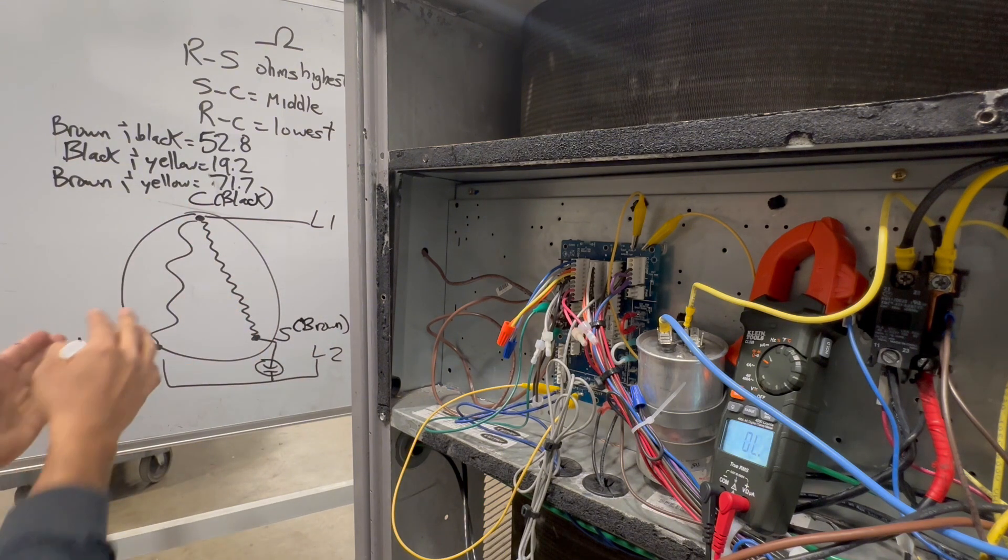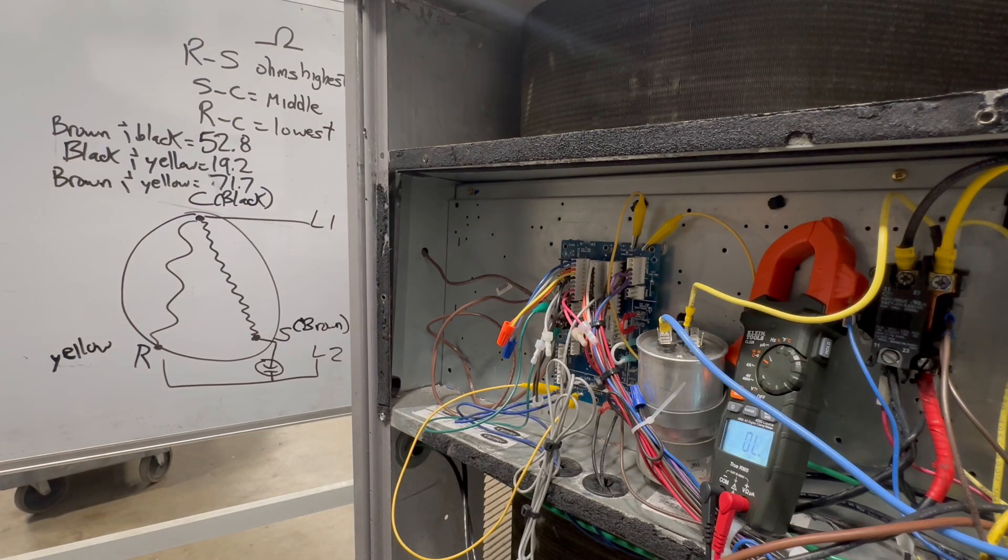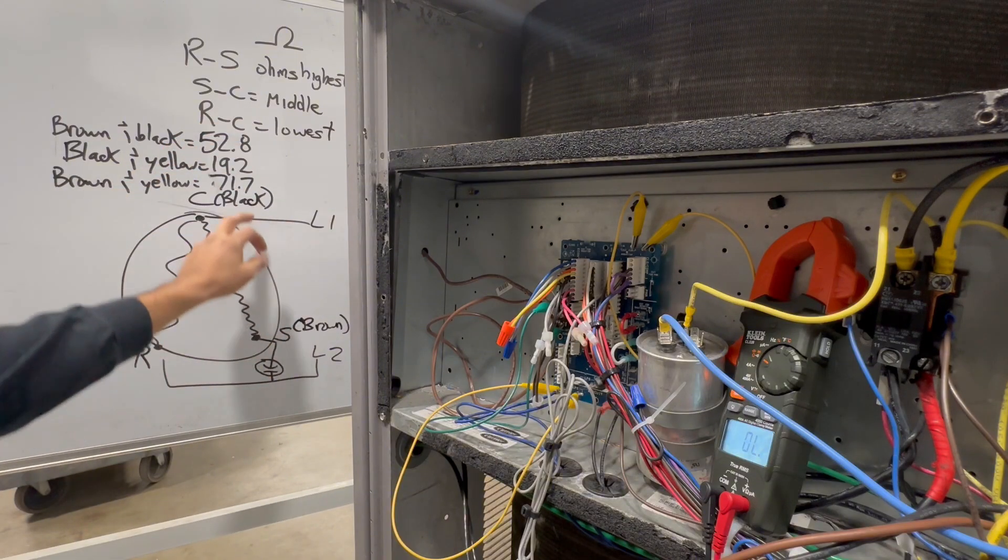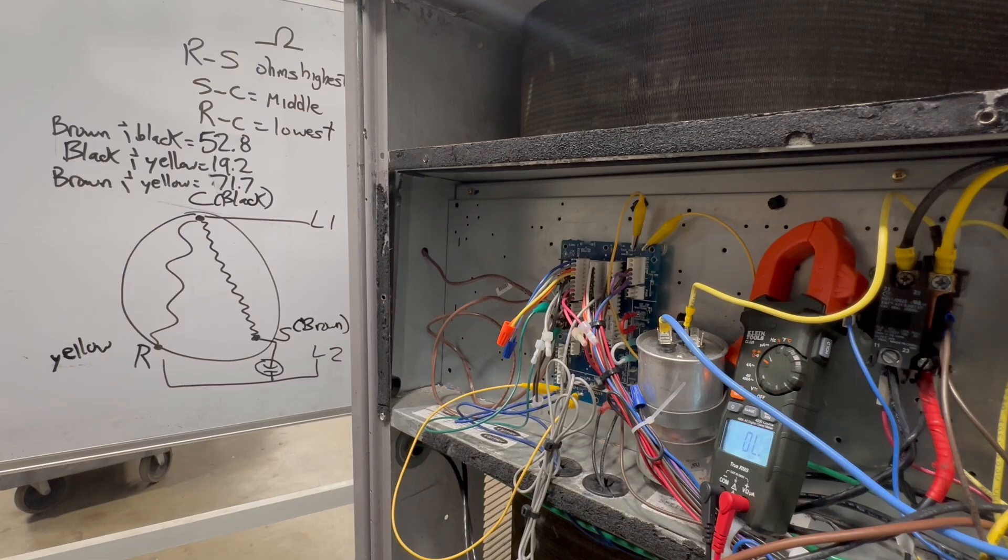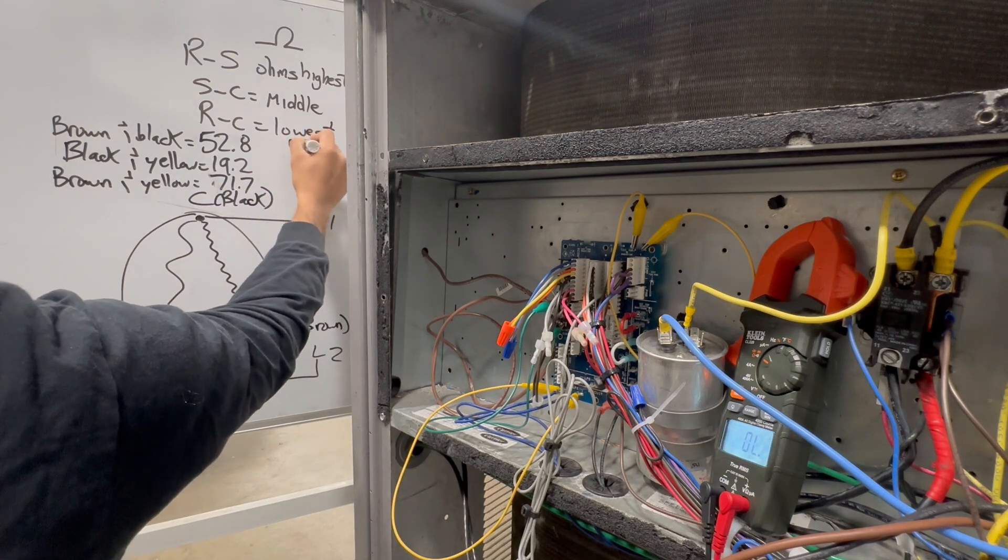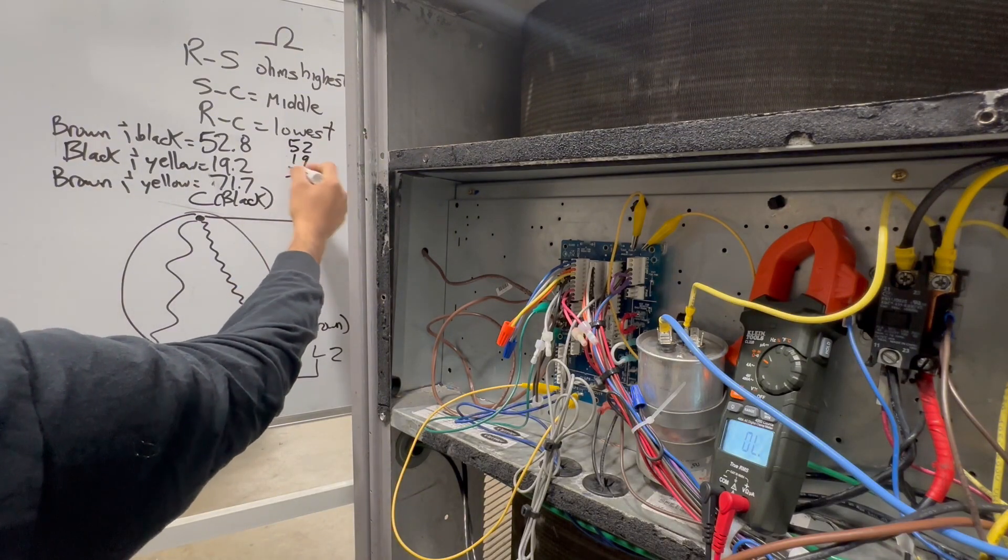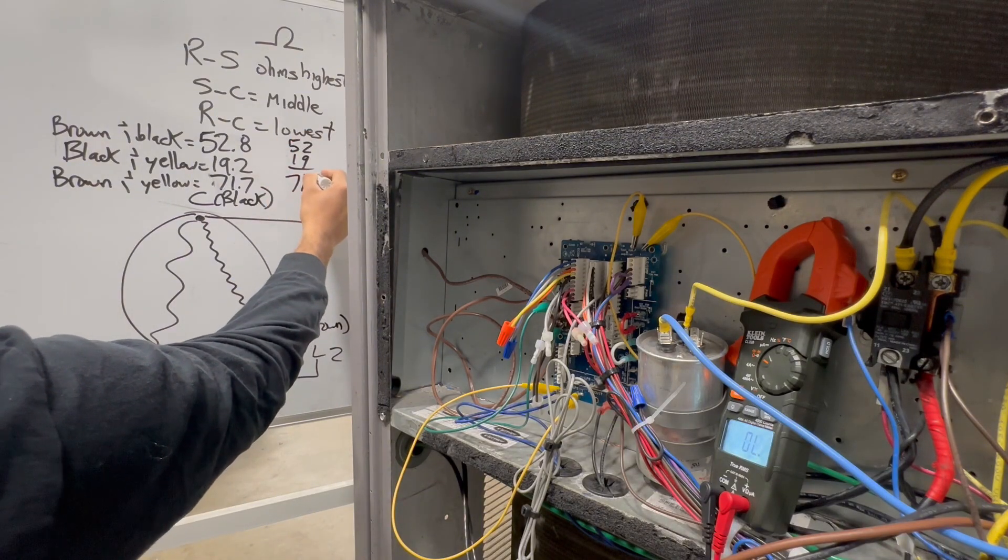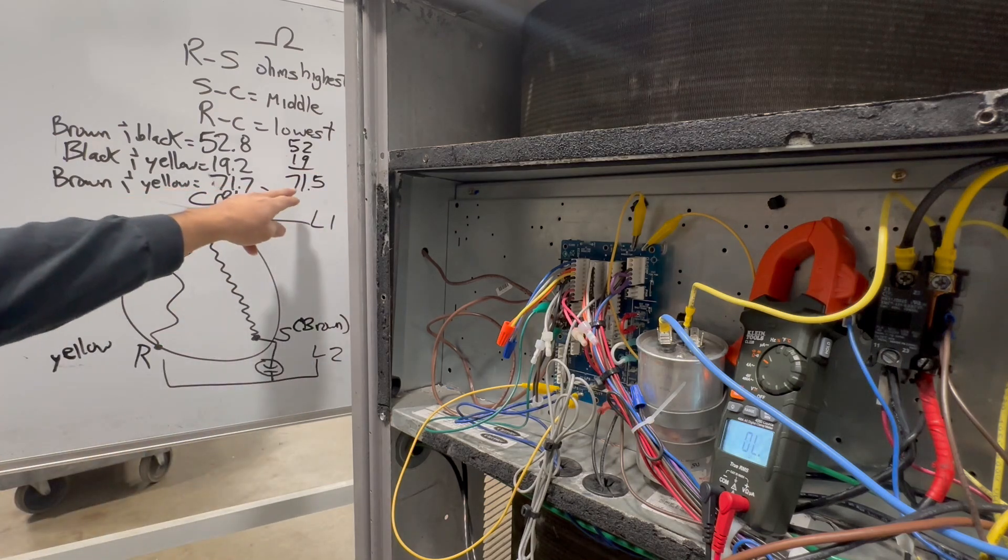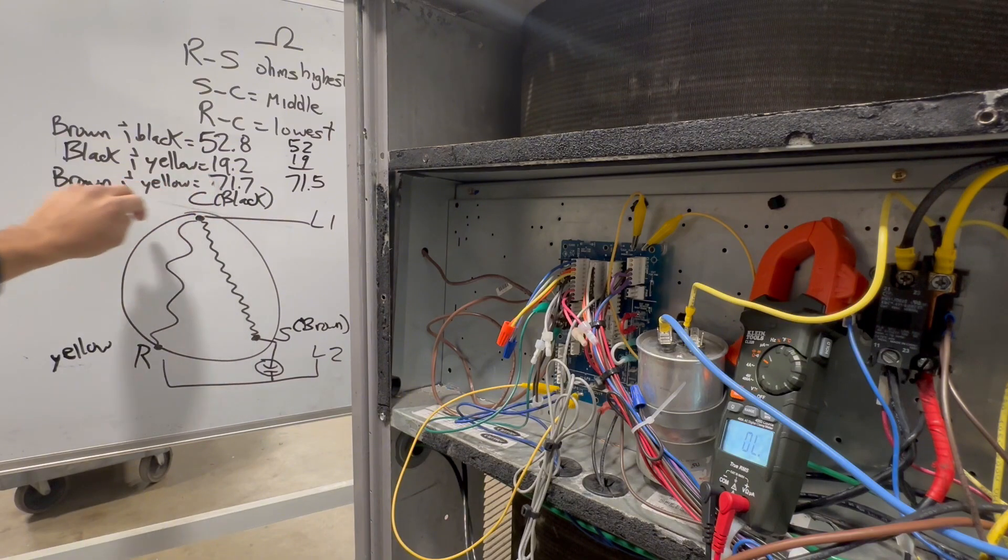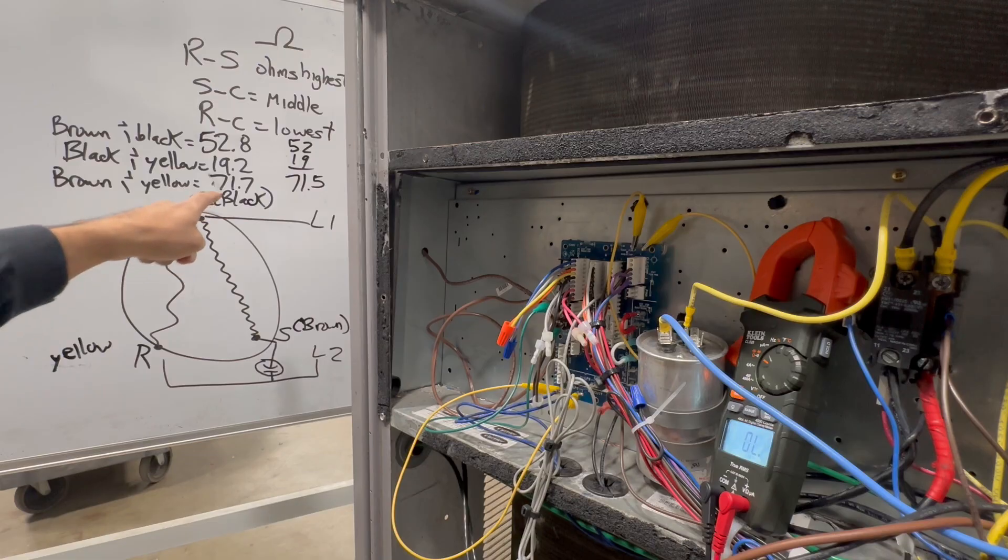And it makes sense, right? Brown and yellow, that's my run and start. That's the highest in ohms because it's going through the run winding and start winding. I'm going through both coils. The smallest one is going to be my run winding. So black and yellow, sure enough, is the lowest in ohms. And the middle one is going to be between common and start, which is my brown and black. And more or less, when these two add together, right, 52 plus 19, what is that, 71, almost 71. So when we add these two, they should add up close to run and start. And sure enough, we are. We're pretty close.